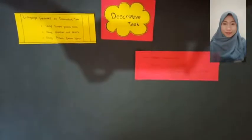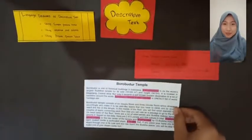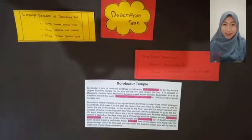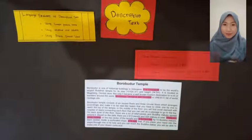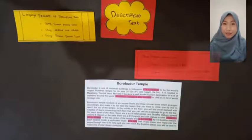The last language feature of descriptive text is using present passive voice. Present active formula: Subject + verb one + object + adverb. Present passive formula: Object + is/are/am + verb three + by + subject + adverb.